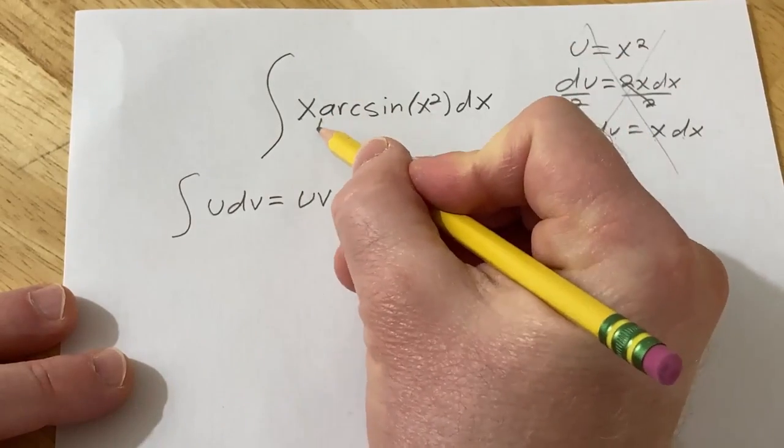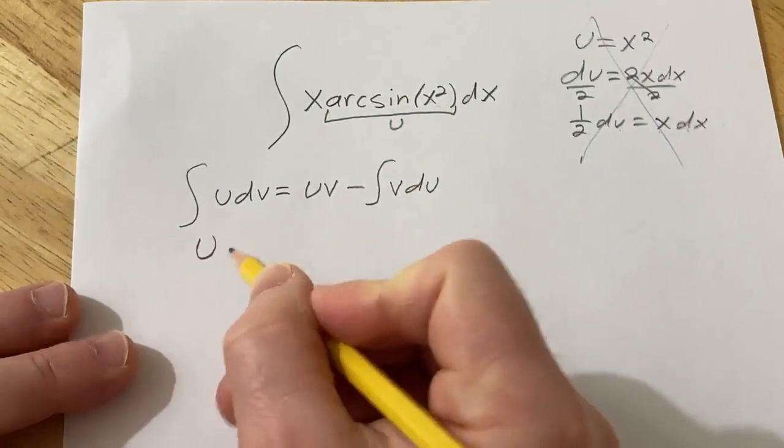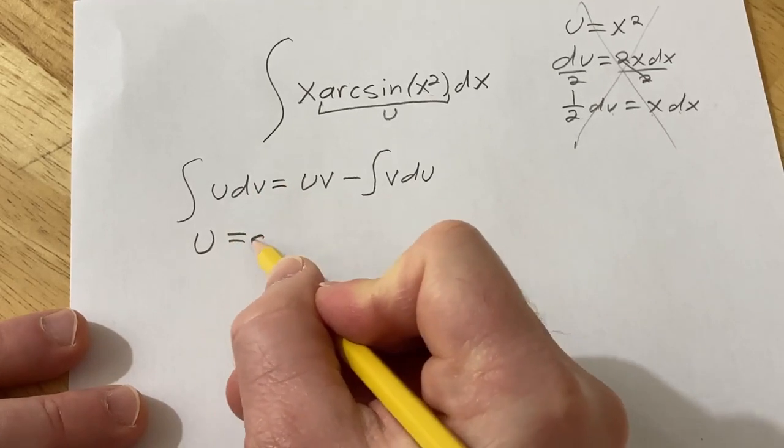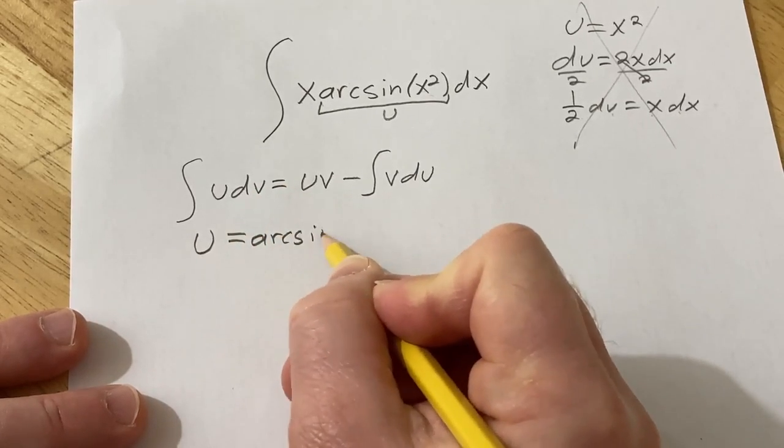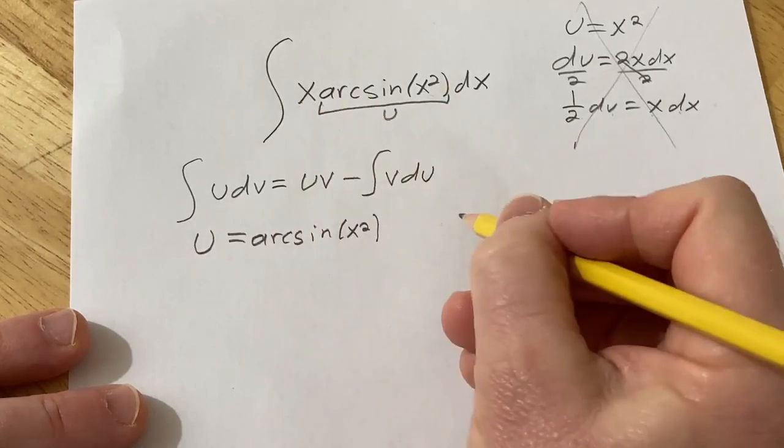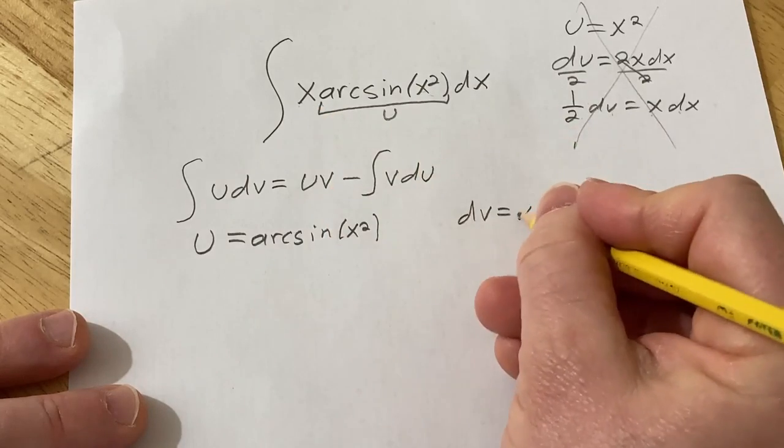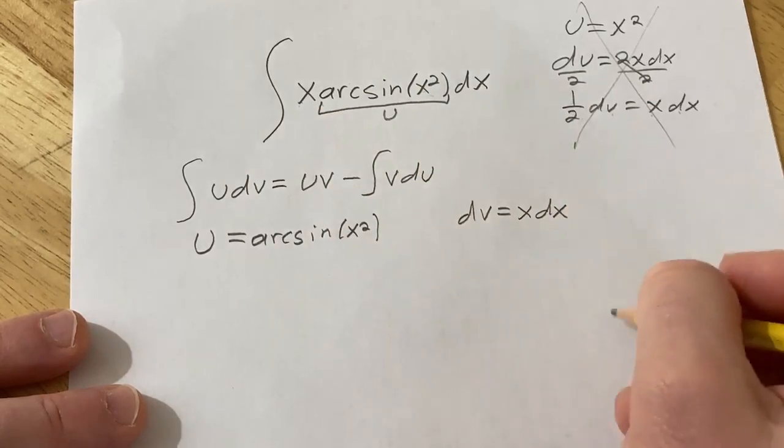You can do that if you let this entire thing here be U. So we're going to let U be equal to the arcsin of x squared. And then dV is what's left over. Remember, when you're using parts, the dV always has to have the dx. So dV is x dx.